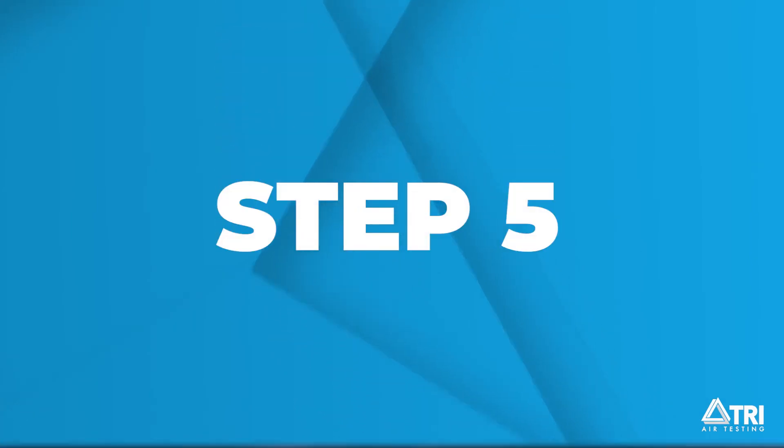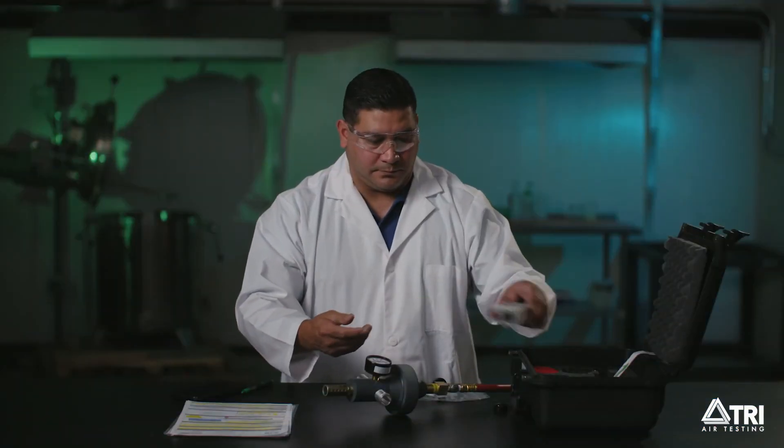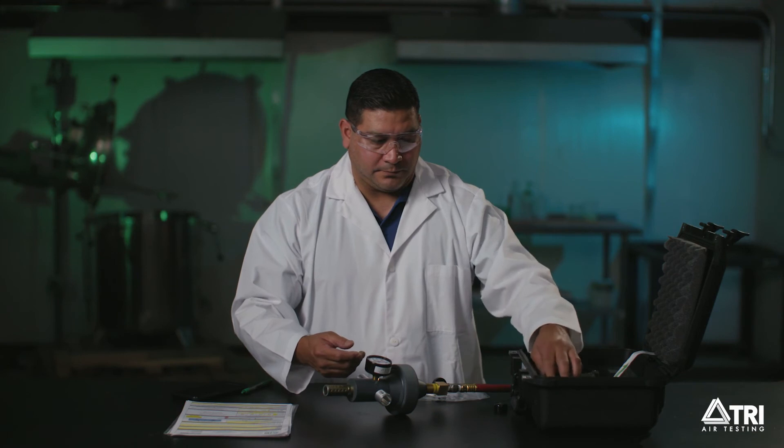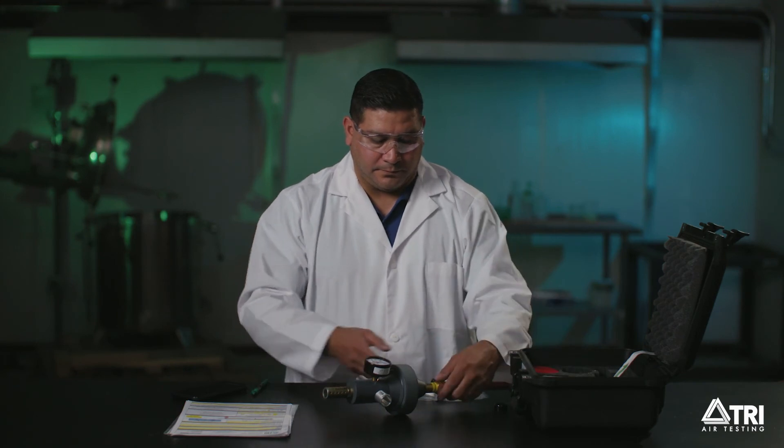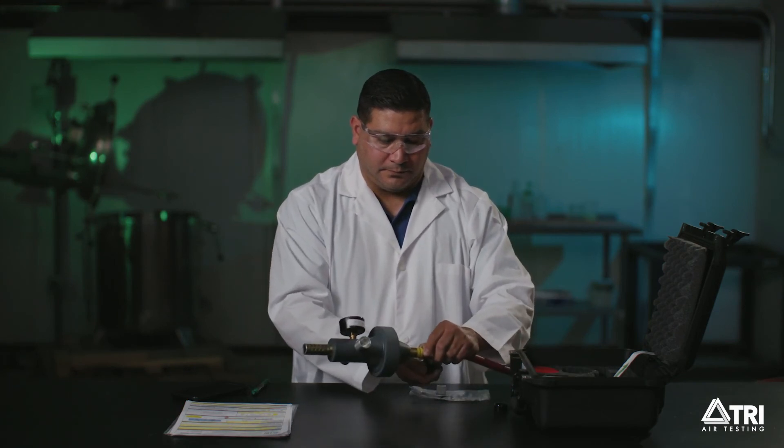Step 5. You have just completed the basic gas sampling procedure. If you are not doing any additional sampling, turn off the gas source valve and disassemble the sampling equipment.